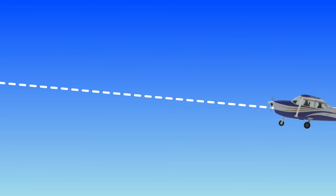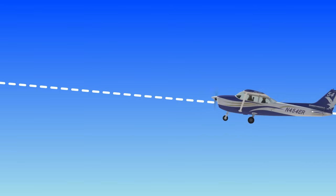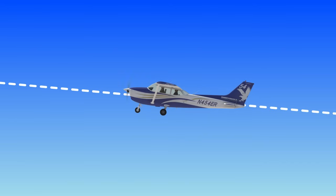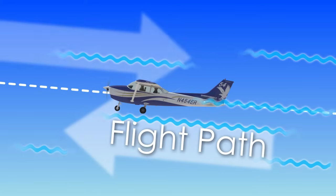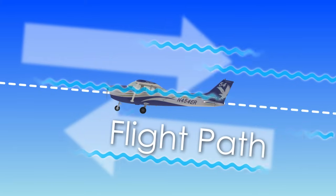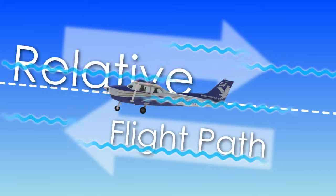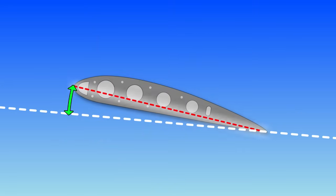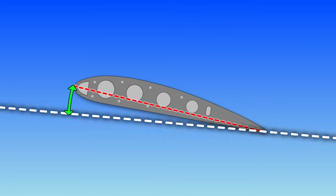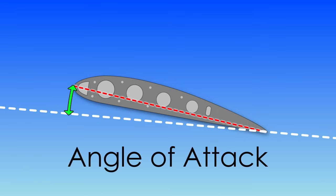As an airplane flies through the air, the path that the plane travels along is known as its flight path. The airflow that flows around the airplane as it travels through the air is known as the relative wind. The relative wind is parallel to, but opposite, the aircraft's flight path. The angle between the wing's chord line and the aircraft's relative wind is called the aircraft's angle of attack.